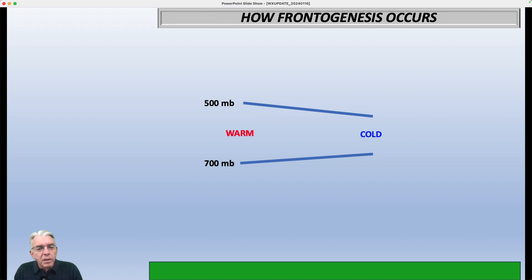Now, if you have frontogenesis going on, then what's going to happen is that you're going to make those lines tilt more severely, because the temperature contrast is actually increasing. So the 500 millibar may tilt up something like this. The 700 millibar tilts something like this.